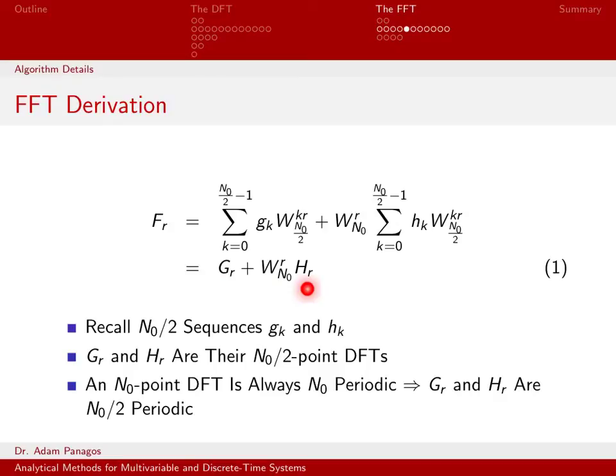So at this point, by introducing these definitions of the even and odd sequences, we're able to write this thing that we would like to compute as really the sum of those two pieces, G of R plus a number times H of R. One thing to keep in mind that will be important here on the next chart is that when we have an n naught point DFT, the coefficient F sub R is always n naught periodic. Here, G of R is the n naught over 2 DFT, so it is n naught over 2 periodic. Similarly, H of R is an n naught over 2 DFT, so H of R is n naught over 2 periodic. So we will use that fact when we continue the algorithm derivation on the next slide.